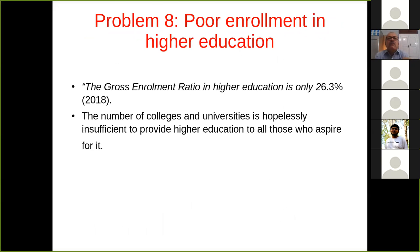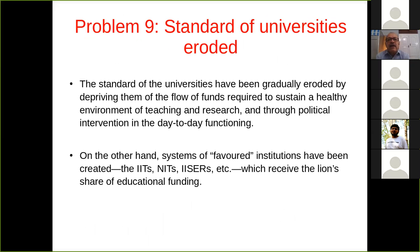There is poor enrollment in higher education. In the government's own admission, the gross enrollment ratio in higher education is only 26.3% as of 2018. The number of colleges and universities is hopelessly insufficient to cater to the required number of students. The standard of universities has eroded due to various governmental interventions and the lack of funds. All that put together has resulted in a situation where university education has been eroded, while a few favored institutions — IITs, NITs, IISERs — have been created with a large share of funding.